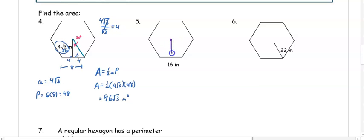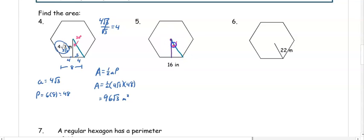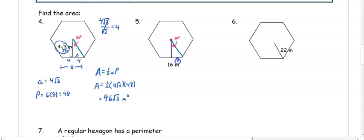In number five, we are given the side of the hexagon. We draw in the apothem and the angle is 30 degrees. If the side is 16, it splits into 8 and 8. With sides s and s root 3, s equals 8, so the apothem is 8 root 3. The area formula is one half times apothem times perimeter, and the apothem is 8 root 3.